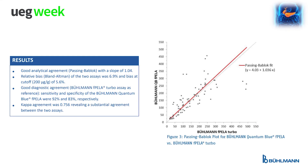Additionally, a method comparison of the new lateral flow assay with the Bowman-F-Elasturbo assay with 80 clinical samples is represented in Figure 3. The Passing-Bablok regression shows a good analytical agreement with a slope of 1.04.